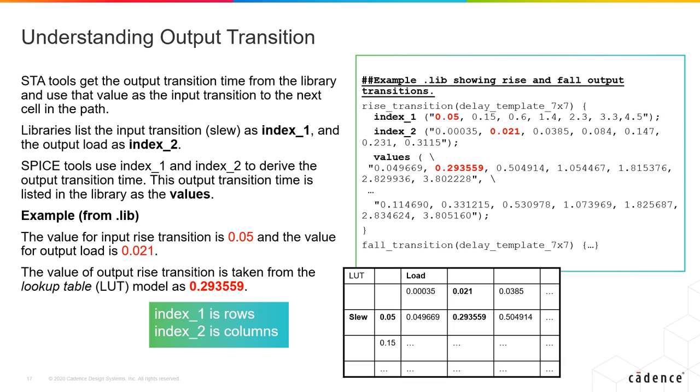In these lookup tables, remember that index 1 is always the row and index 2 is always the column. This way you can always identify what the values are based on what is specified for index 1 and then index 2.